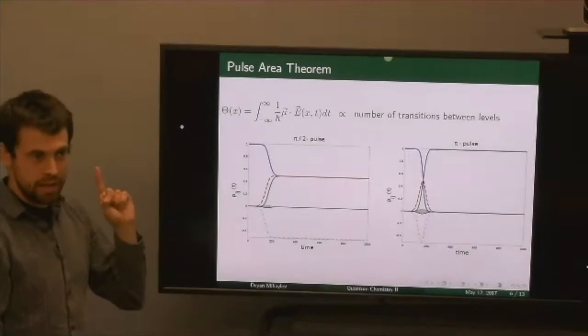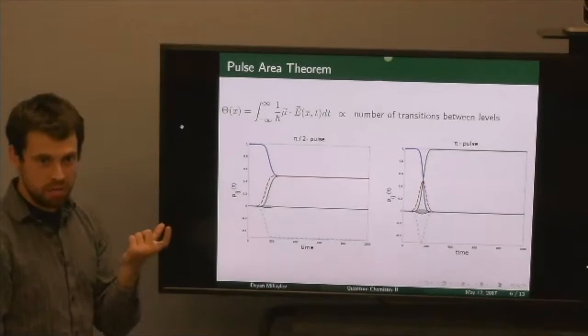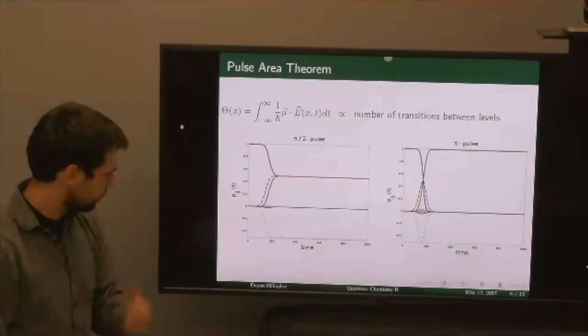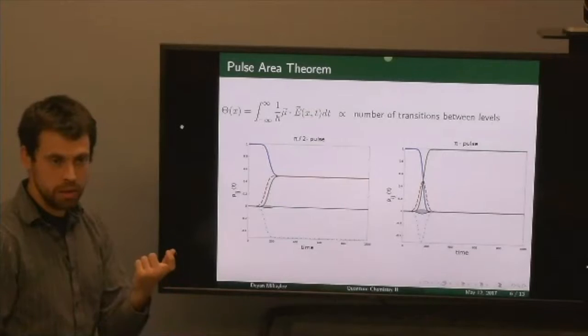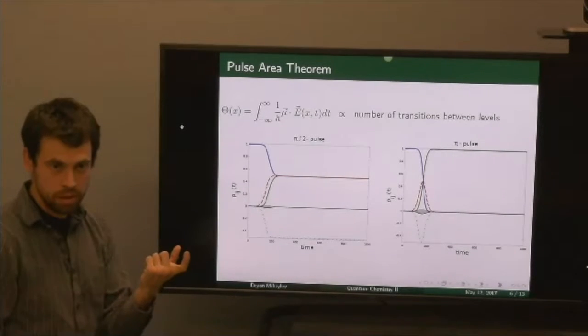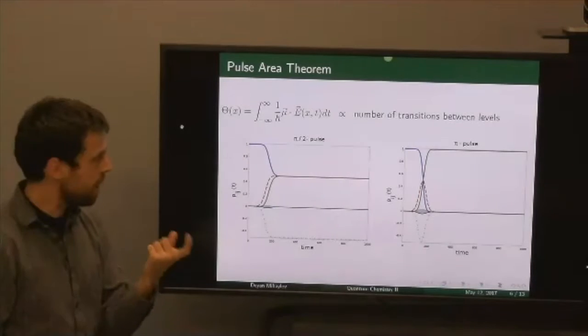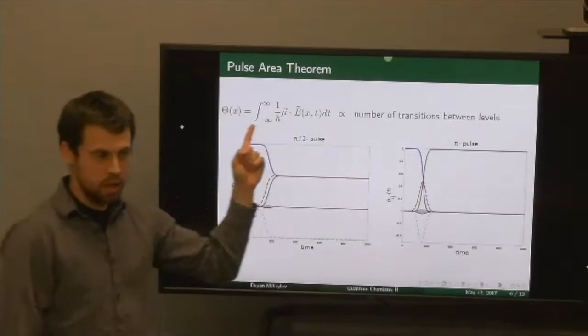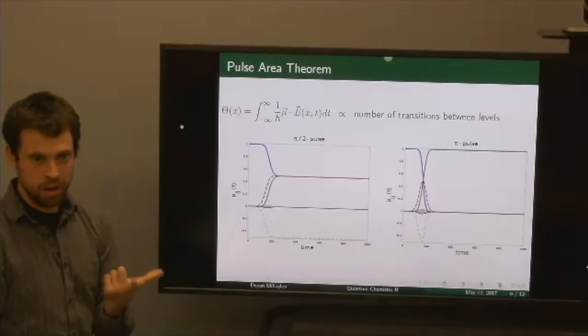You can excite your system with a pulse of a certain length in time, and only the area under the pulse in time is what matters for the number of transitions between your levels. So it's area in time - it's hard to think about it.